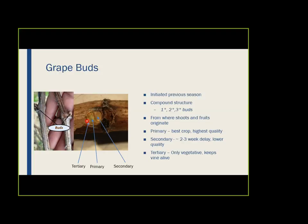The last bud — it's very small, about the size of a pinhead in this picture — that's your tertiary bud. The tertiary bud really just keeps the plant alive. Worst case scenario: if your primary bud and secondary bud are dead, you're left with the tertiary bud, and that'll keep the vine alive. It's going to be vegetative only, but you'll be able to save the vine and get something next year.